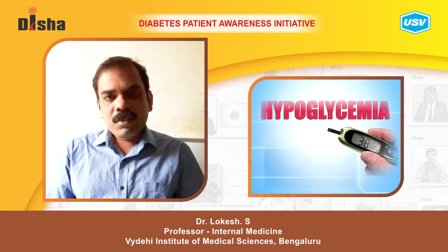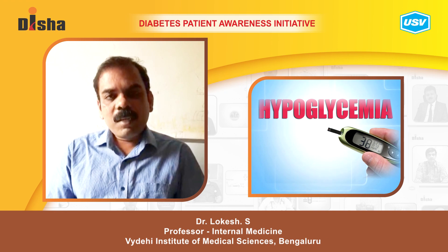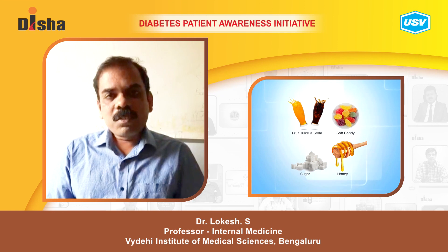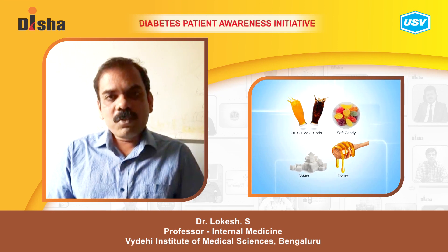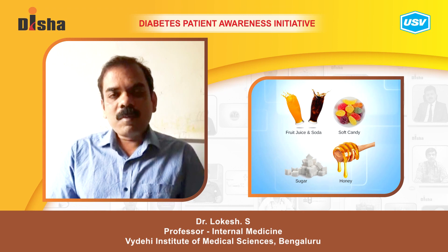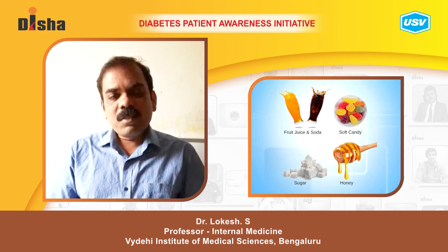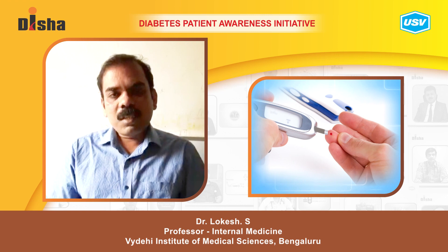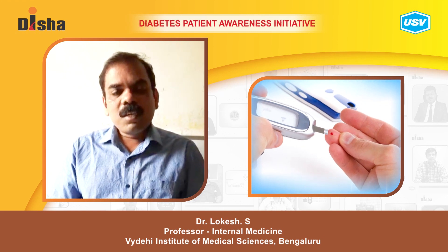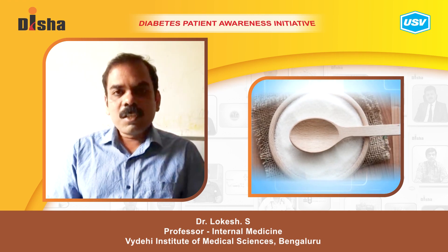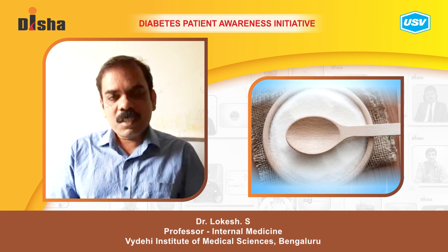If the sugars are very low — below 70 milligrams per deciliter — start treating immediately by giving sugar-containing solutions such as fruit juices, sugar, or honey — anything commonly available at home. You can follow the simple rule of 15: check the sugars, and if below 70 mg/dL, give 15 grams of carbohydrates, wait 15 minutes, then check again. If still low, give another 15 grams of carbohydrates.